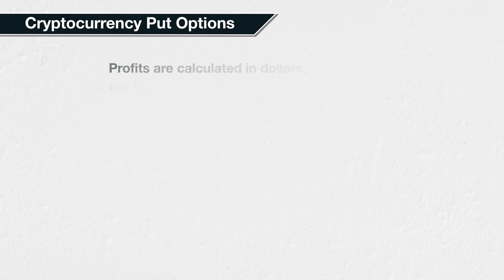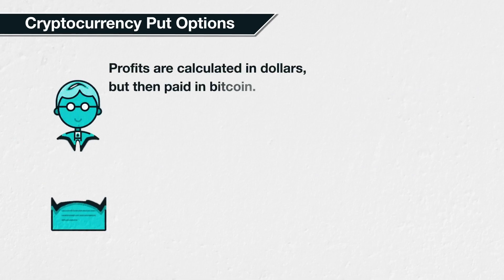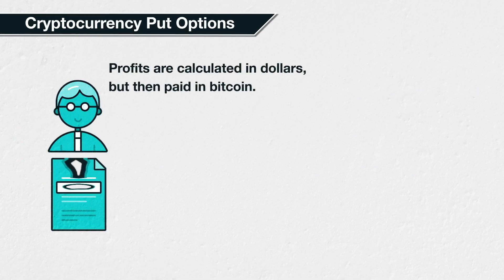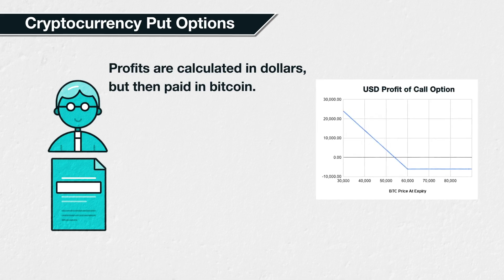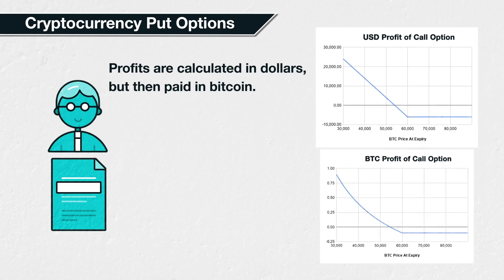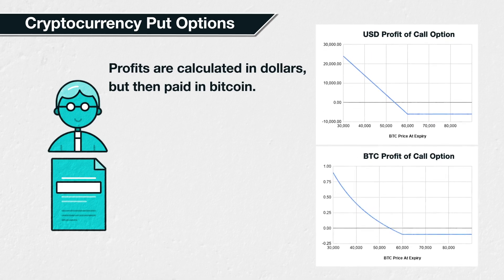A put option gives the holder the right to sell something. The same is true for a cryptocurrency put option. When a put option expires, its value will be equal to any amount below the strike price that the underlying price is when the option expires. Again, this is true for cryptocurrency put options.